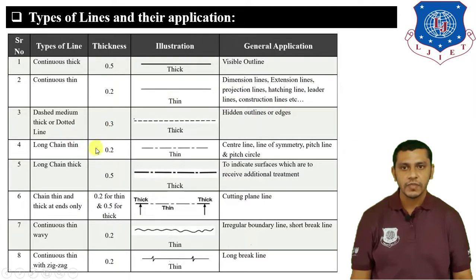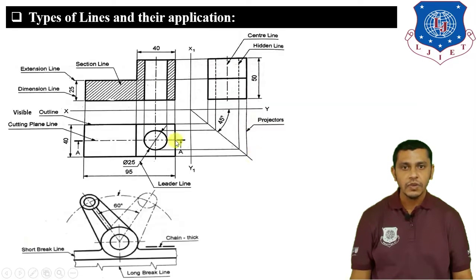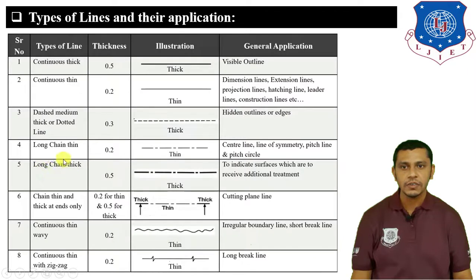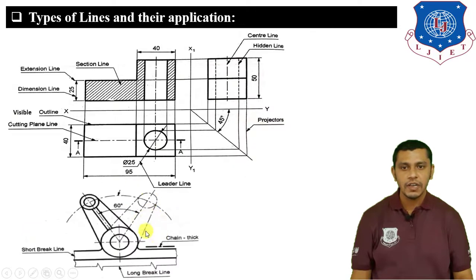Next is long chain thin line. It is 0.2 mm in thickness; we use a 4H pencil, lighter in shade. It is used to show center lines, lines of symmetry, pitch lines, and pitch circles. In the figure, you can see the pitch circle — to show the pitch circle, locus, or center of a circle or object, we use the chain line. Next is long chain thick line — 0.5 mm in thickness, drawn with an HB pencil, darker in shade — used to indicate surfaces which require additional treatment, as shown in the figure.